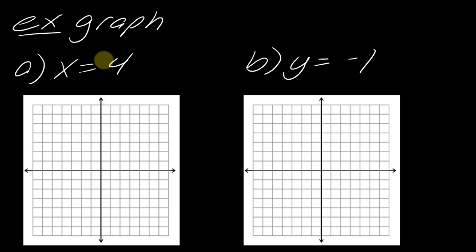So for a here, so no matter what, your x's have to be four. So here's where an x is four, here's where an x is four, and here's where my x is four. So I chose three different y coordinates. As long as my x is four, I'm good to go. So here's my vertical line.